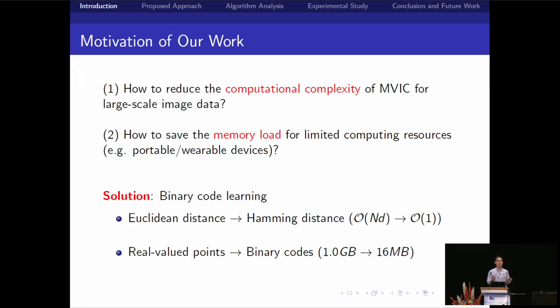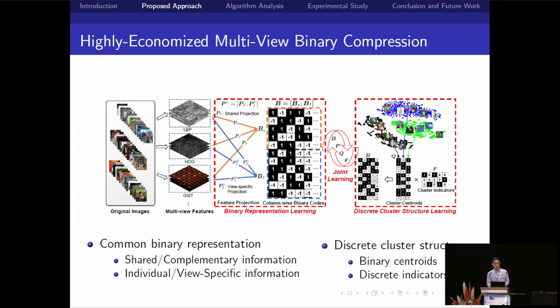The straightforward solution is using binary code. Binary code can provide two fundamental priorities. The first one is using much lower computational complexity to compute the distances. The second one is if you use 1 GB real value points, the quantitative bandwidth is just 16 MB. So the memory overhead is largely reduced. We have a general learning framework of common representation learning and discrete class structure learning. Generally, we project the multi-view data to a common Hamming space used for multi-view binary compression. At the same time, the complementary properties of different views are used in learning common binary codes.